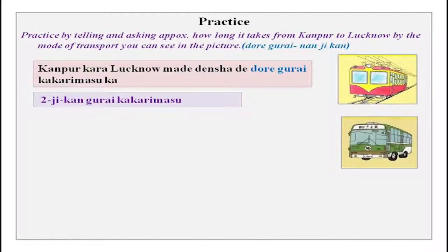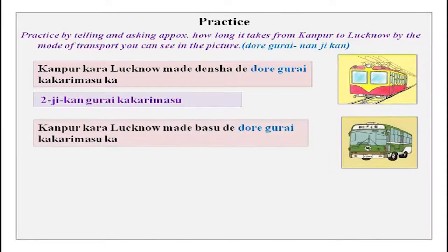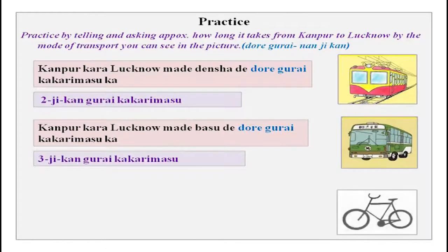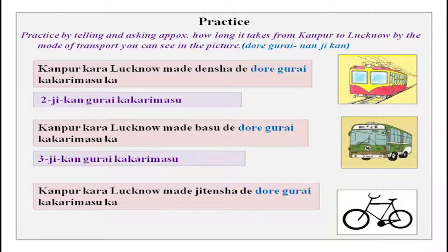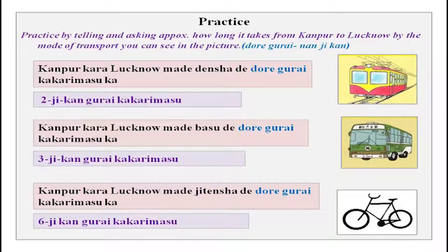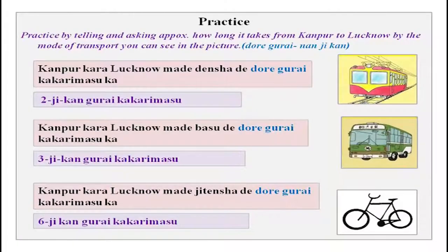The second picture is bus: Kanpur kara laknau made bas de doregurai kakarimasu ka? Sanjikan gurai kakarimasu. Then we have a cycle — jitensha: Kanpur kara laknau made jitensha de doregurai kakarimasu ka? Roku jikan gurai kakarimasu. You could also say roku jikan kakarimasu — that means exact time. But since you never know how long transport will take, you can use gurai. Kurai and gurai are both the same.